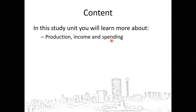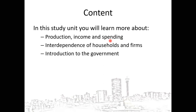We shall take into account the interdependence of households and firms — how do households and firms interlink. After that we shall introduce the government. When we take into account the interdependence of households and firms, we are referring to what is known as the circular flow of income. But we shall go a step further, introducing the government, because taking into account only households and firms is not enough within the economy.